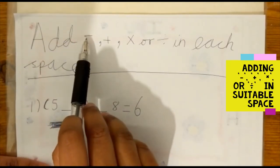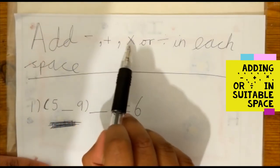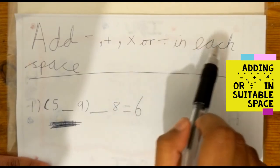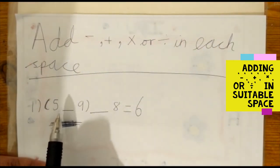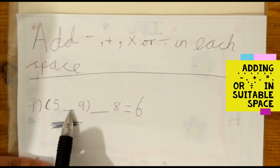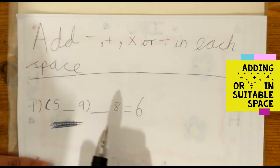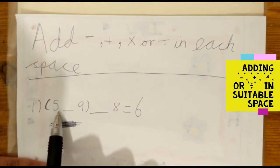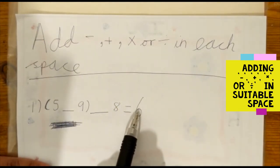Add the subtraction sign, the addition sign, the multiplication sign, or the division sign in each space. The sum we have has two different symbols missing. So we have 5 something 9 something 8 equals 6.